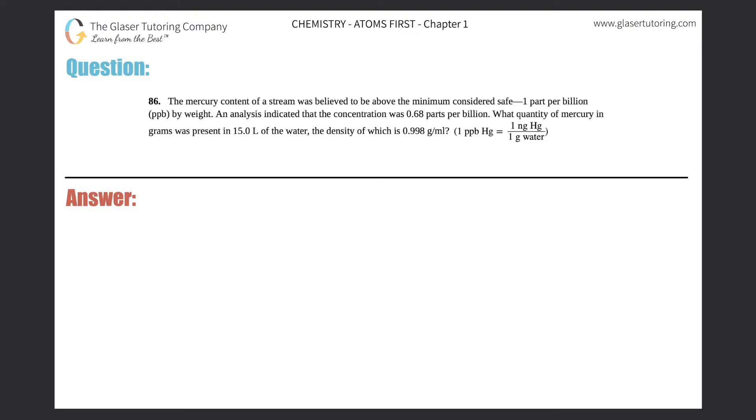Number 86. The mercury content of a stream was believed to be above the minimum considered safe, 1 part per billion or PPB by weight. An analysis indicated that the concentration was 0.68 parts per billion. What quantity of mercury in grams was present in 15.0 liters of the water, the density of which was 0.998 grams per milliliter? And they give us a nice formula: 1 PPB mercury equals 1 nanogram of mercury divided by 1 gram of water.